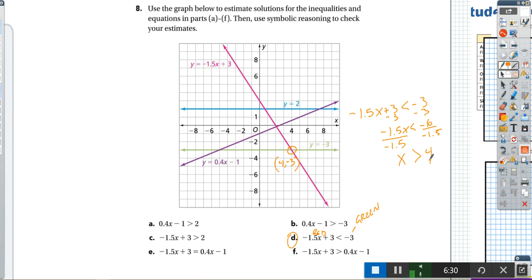Oh, so x has to be greater than 4 for us to have the pink line below the green line. And that's what it's asking you to do in this problem. Identify the point of intersection in the graph. And then solve symbolically to verify that you found the x value. Okay?